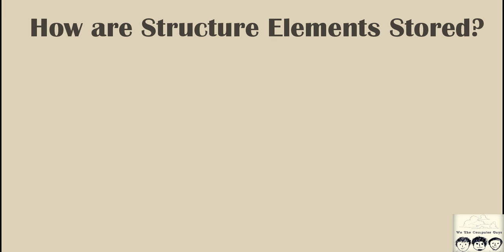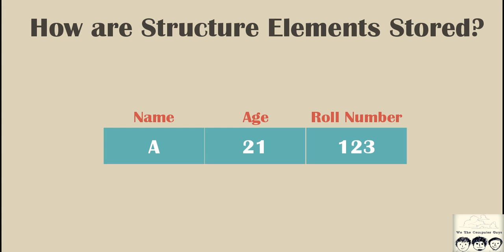So assume a structure which contains three properties: name, age, and roll number. Suppose we created a dummy structure containing certain values, say name as 'A', age as 21, and roll number 123. One thing to note is that our name is a character, it's not a string, so it is a single character. Age is an integer, roll number is an integer.